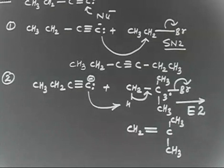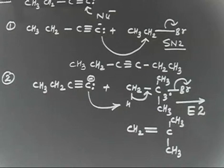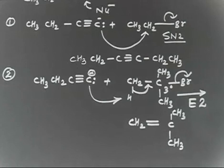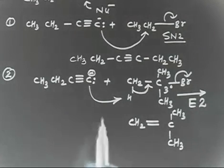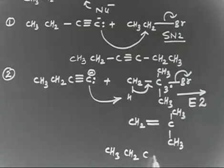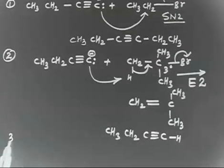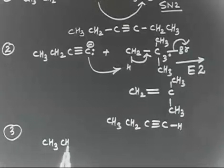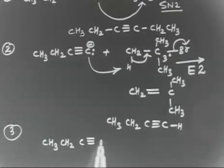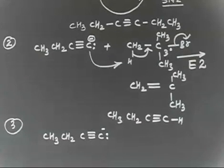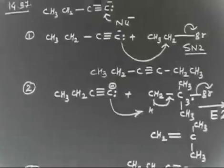Because the substrate is a tertiary alkyl halide, there is too much steric hindrance for a nucleophile to attack. As we have said many times in class, if you have a tertiary alkyl halide, elimination is the more predominant reaction. So in this case the major product is the alkene from E2. Additionally, the acetylide, having taken H plus, becomes CH3CH2C≡CH — an alkyne product as well.